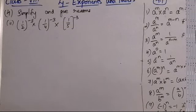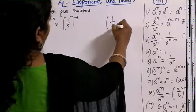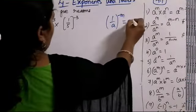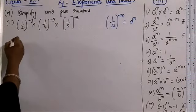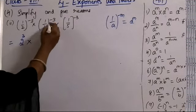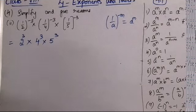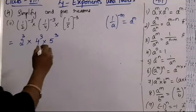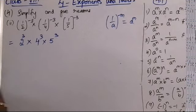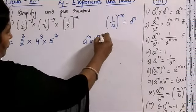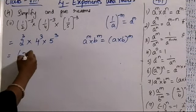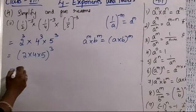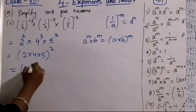Second question: (1/2)^(-3) × (1/4)^(-3) × (1/5)^(-3). Using 1/a^(-m) = a^m: this becomes 2³ × 4³ × 5³. The powers are the same but bases are different, so using a^m × b^m = (a×b)^m: (2 × 4 × 5)^3 = 40³ is the answer.